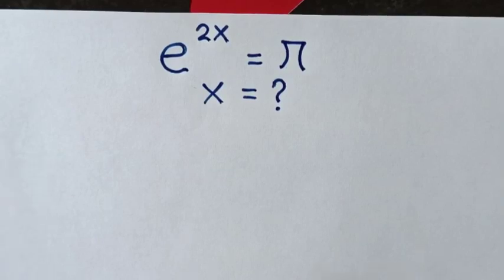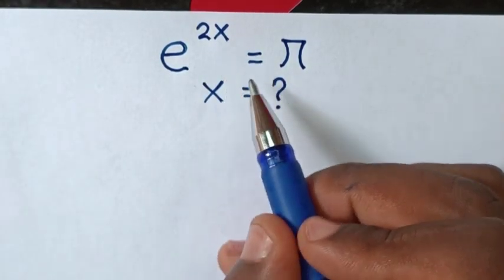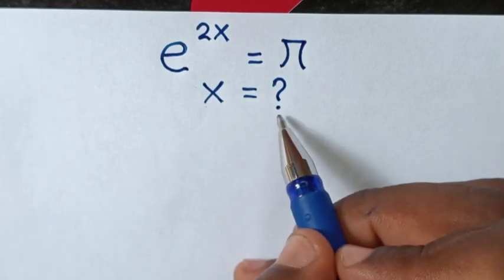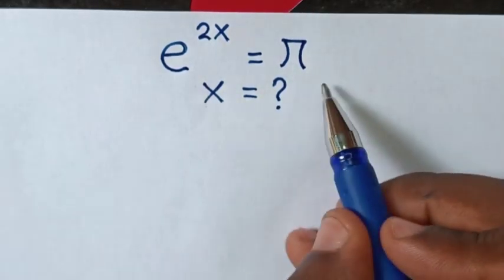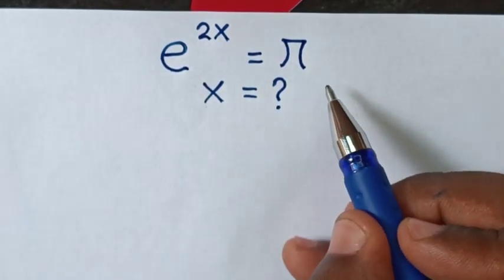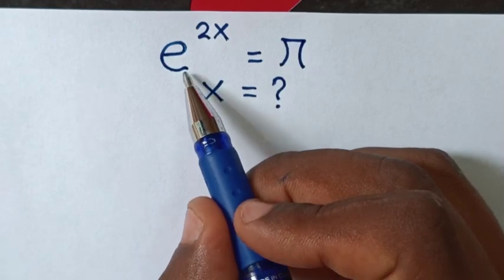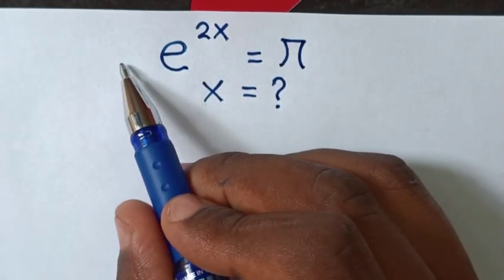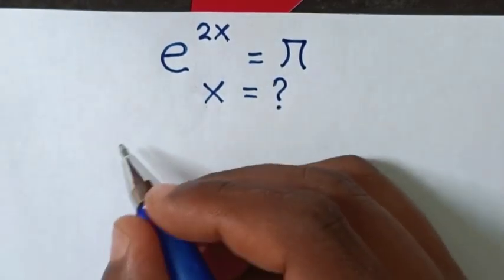Hello. How to solve e to the power of 2x is equal to pi, to find the value of x. So first, from this equation, in this exponent we have base e, so we will apply log base e on both sides.